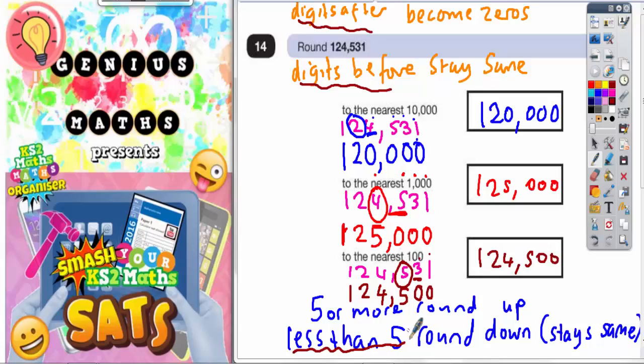Quick recap. So if the deciding digit is 5 or more, you round up. If the deciding digit is less than 5, you round down, which in other words means the digit you're trying to decide about stays as it is.